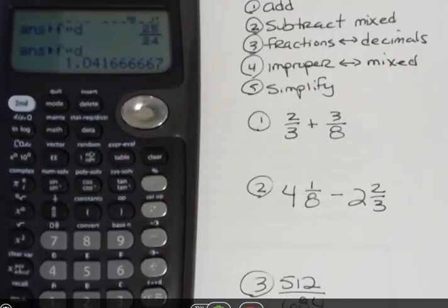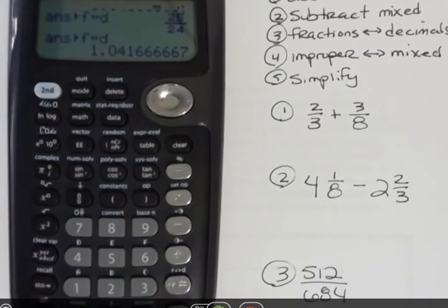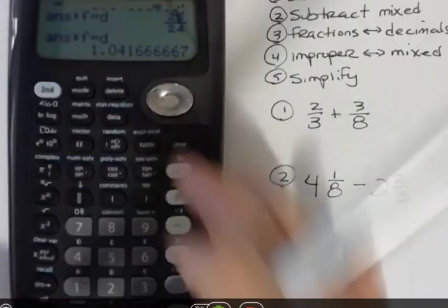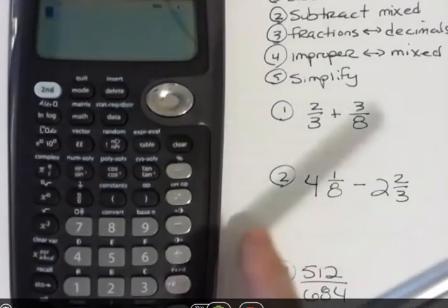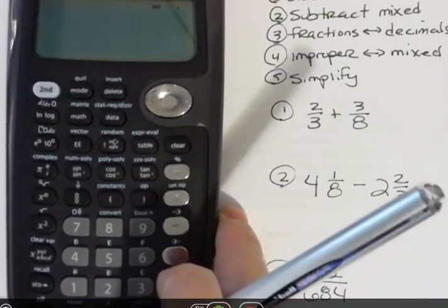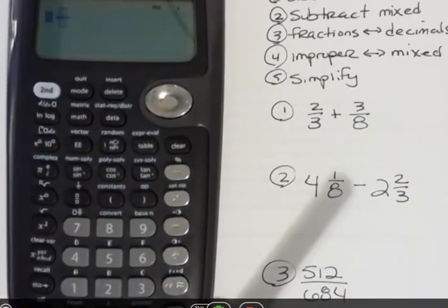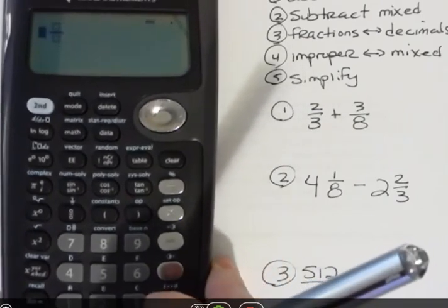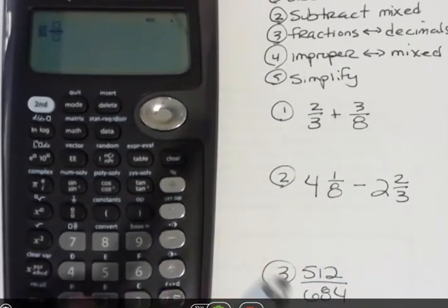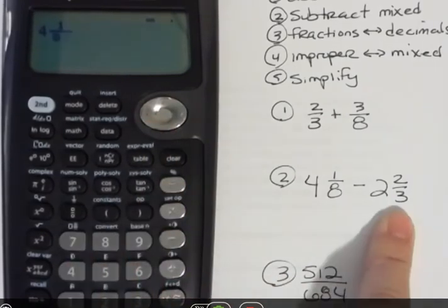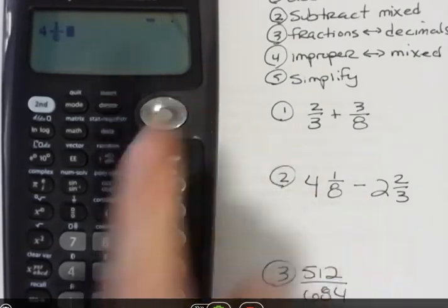If you have a mixed number, the mixed number button is above the seven as well. It's actually one of the second function buttons too. It's between the seven and the fraction button. If I want to enter a mixed number, I'm going to hit second function and then the seven and that gives me that mixed number. So I'm going to put four and then arrow over one arrow down eight. I'm going to do this problem over here.